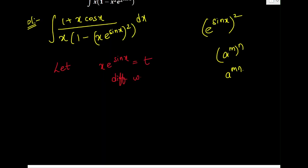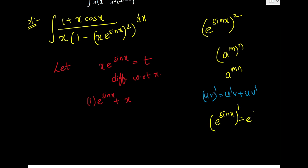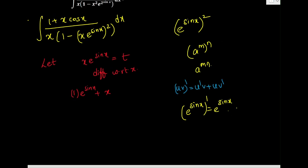To differentiate t = x·e^(sin x), I apply the product rule: (uv)' = u'v + uv'. So the derivative gives: x' · e^(sin x) + x · (e^(sin x))'. The derivative of e^(sin x) is e^(sin x) times the internal derivative of sin x, which is cos x. So we get e^(sin x)(1 + x·cos x)·dx = dt.